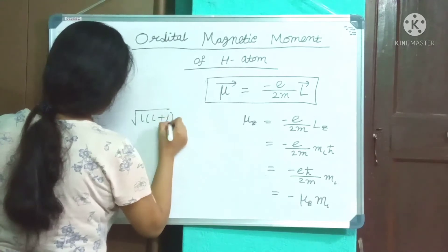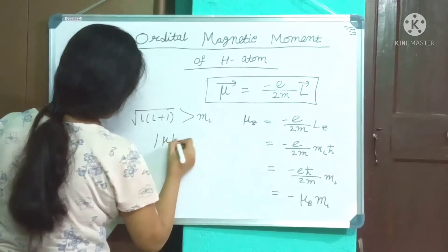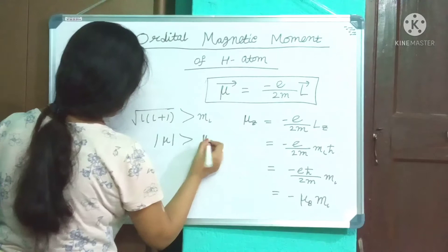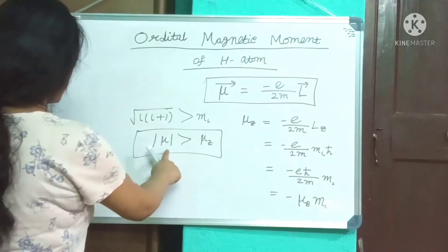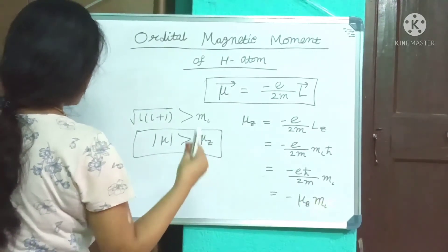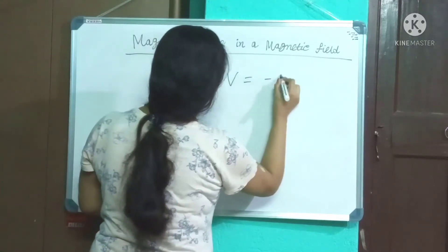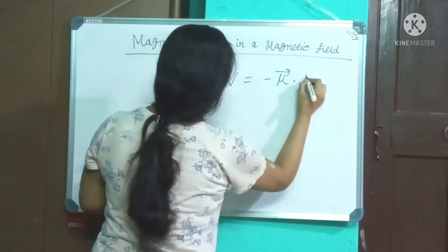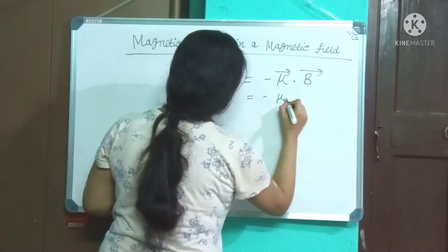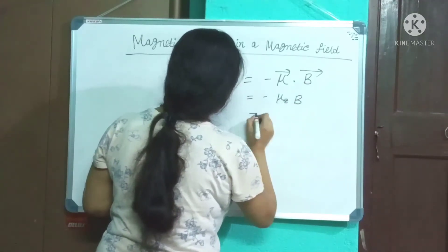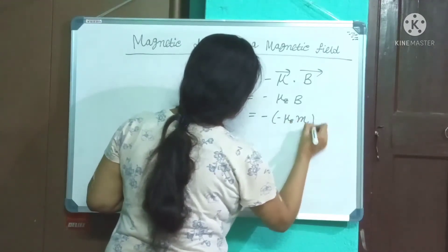Since √(L(L+1)) is greater than m_L, the magnetic moments of atoms are oriented at random. When a magnetic moment μ is placed in a magnetic field B, it acquires a potential energy V equals minus μ·B, which equals minus μ_z × B. Substituting μ_z gives V equals μ_B × B × m_L.